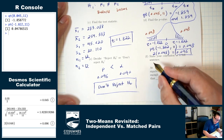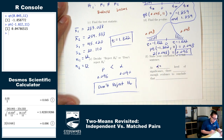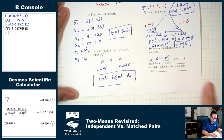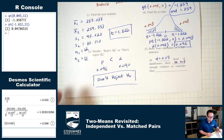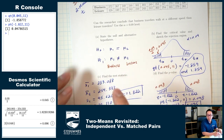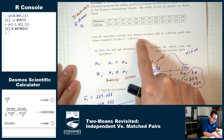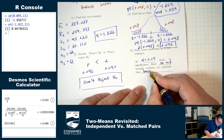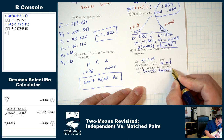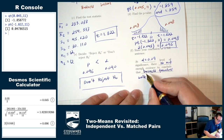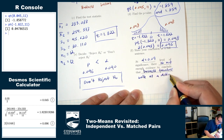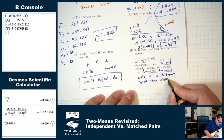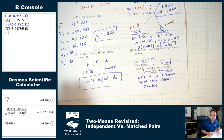Part F: at alpha = 0.09 level of significance, there is not enough evidence to conclude that business travelers walk at a different speed than leisure travelers.